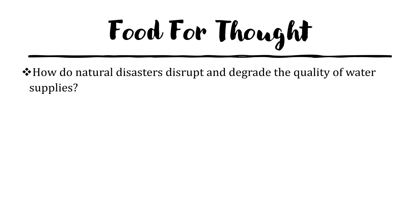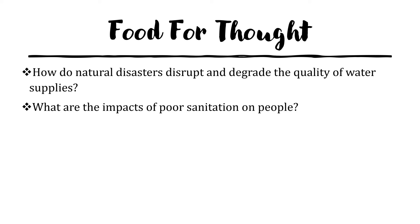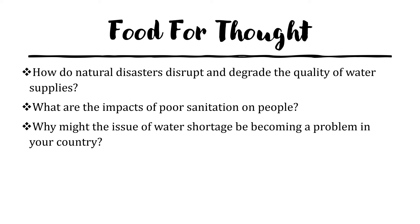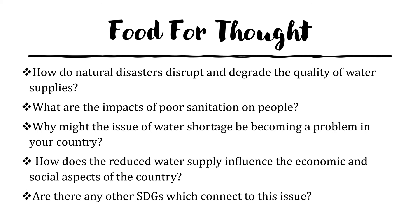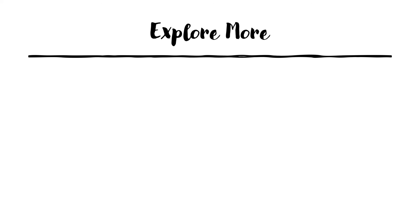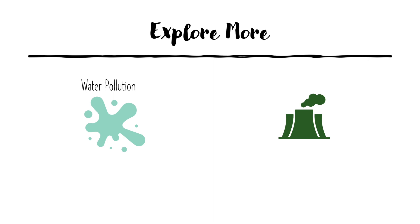There are multiple different reasons for water shortages and sanitation issues. So here's some food for thought. First of all, how do natural disasters such as earthquakes or floods disrupt and degrade the quality of water supplies? What are the impacts of poor sanitation on people? Will water shortages become a problem in your country? How does reduced water supply influence the economic and social aspects of the country? And finally, are there any other SDGs which connect to this issue? Try researching topics related to this issue such as water pollution, natural disasters, and sanitation and hygiene.